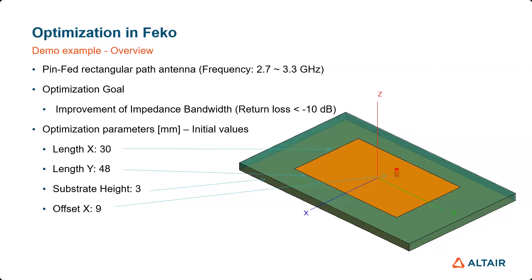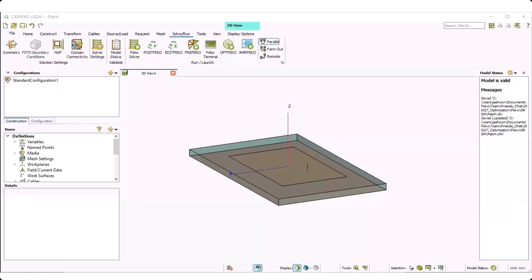The optimizing parameters used for this optimization setting are: length X, the X-dimension of the patch antenna; length Y, the Y-dimension of the patch antenna; substrate height, the thickness of the patch antenna; and offset X, the location of the feeder from the center of the patch. Here are the initial values for each.